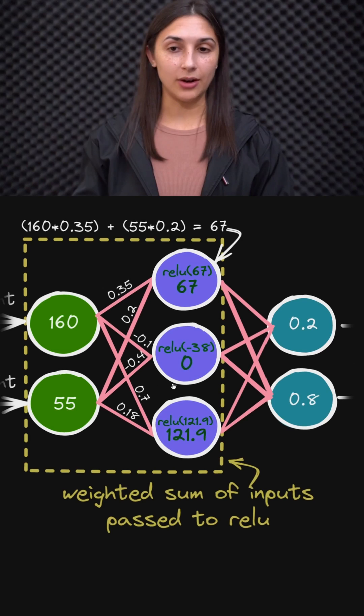Now for this second node in the hidden layer, the value of -38 was computed when we took the weighted sum of inputs. When we calculate 160 times -0.1 plus 55 times -0.4, we get -38 as that value.